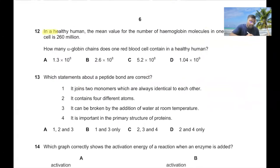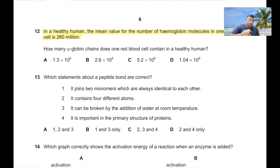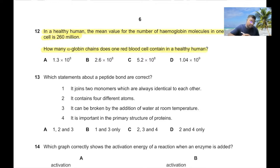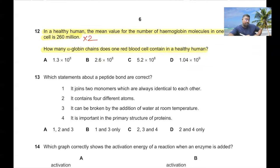Question 12: A healthy human has a mean of 260 million hemoglobin molecules per red blood cell. Since each hemoglobin has two alpha globin chains, multiply 260 million by 2, giving 5.2 × 10⁸. So option C is the correct answer.